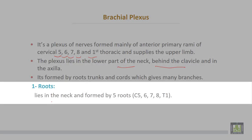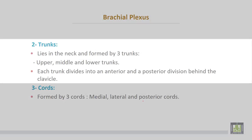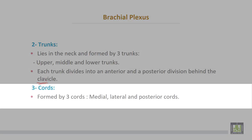The roots lie in the root of the neck and are formed by 5 roots: C5, C6, C7, C8, and T1. The trunks lie in the neck and are formed by 3 trunks. Each trunk is divided into anterior and posterior divisions behind the clavicle. The cords are formed by 3 cords: medial, lateral, and posterior.